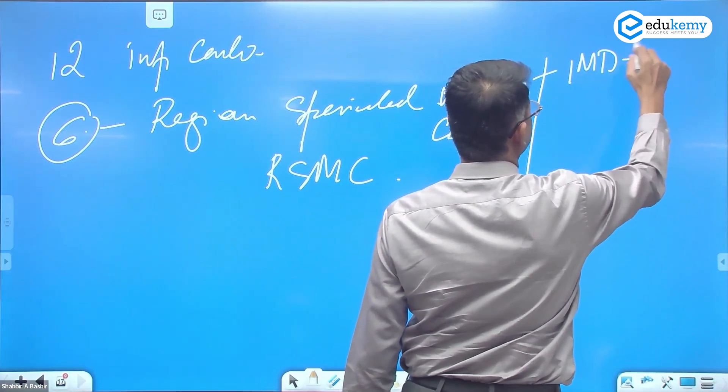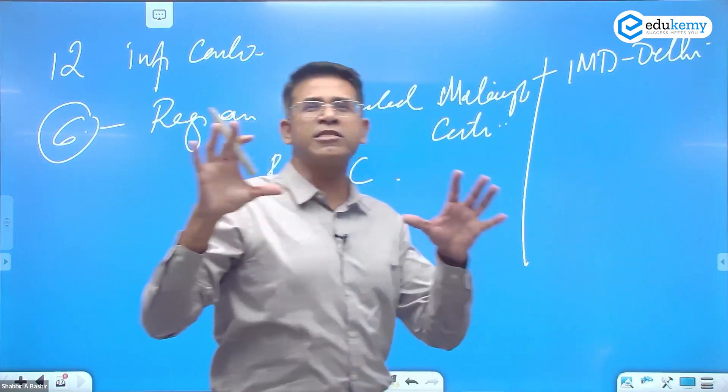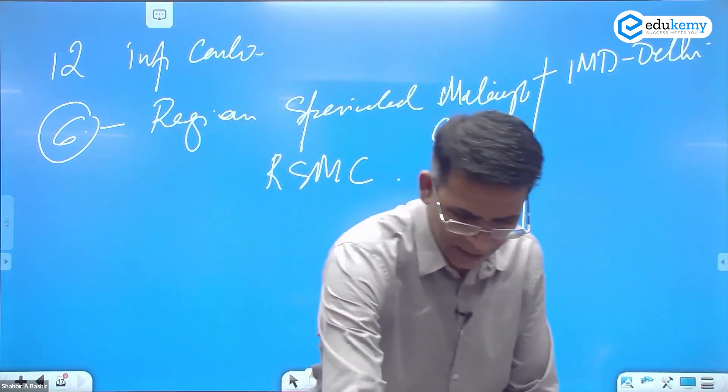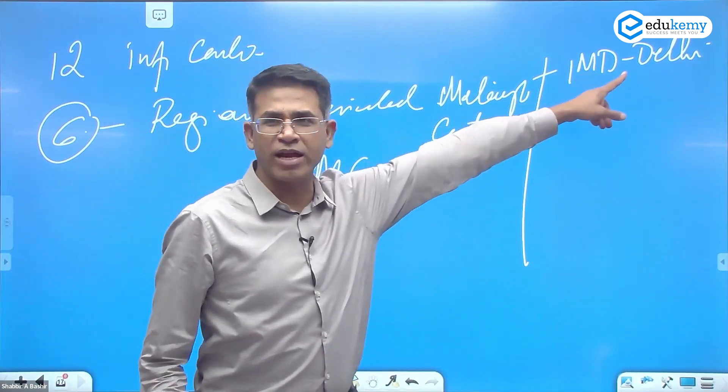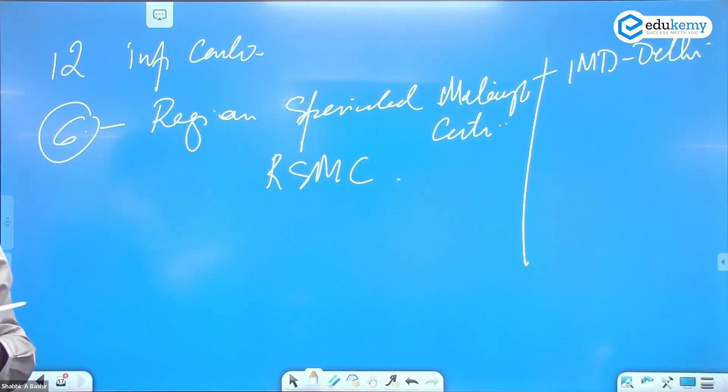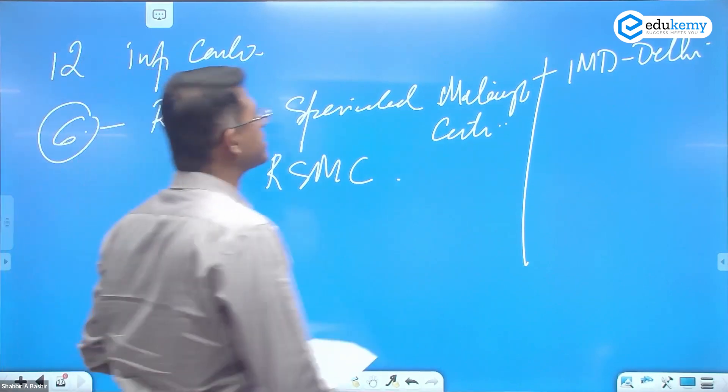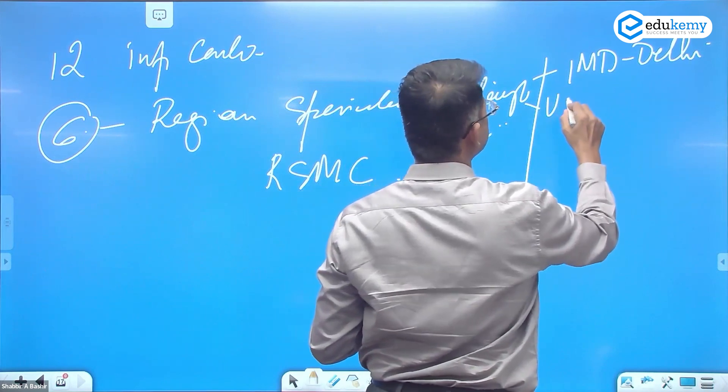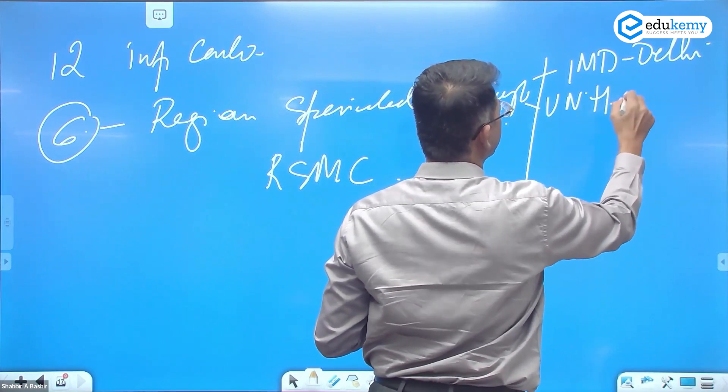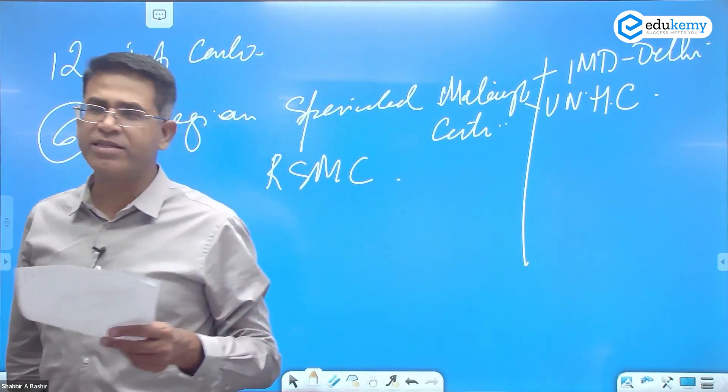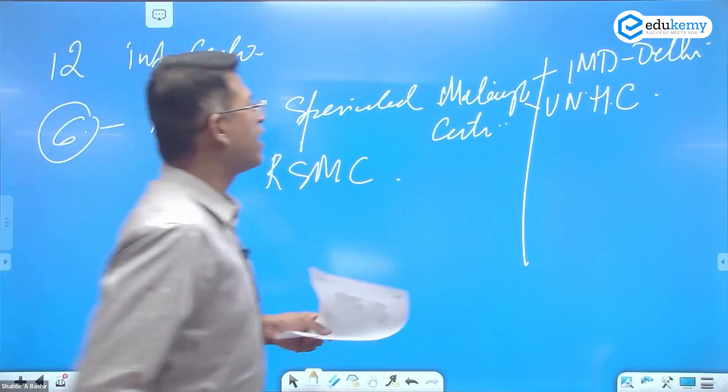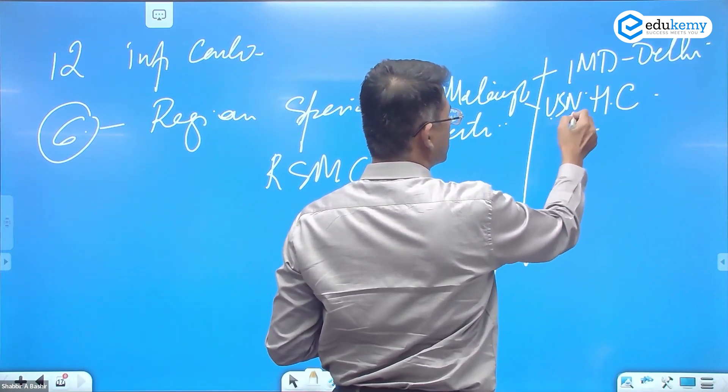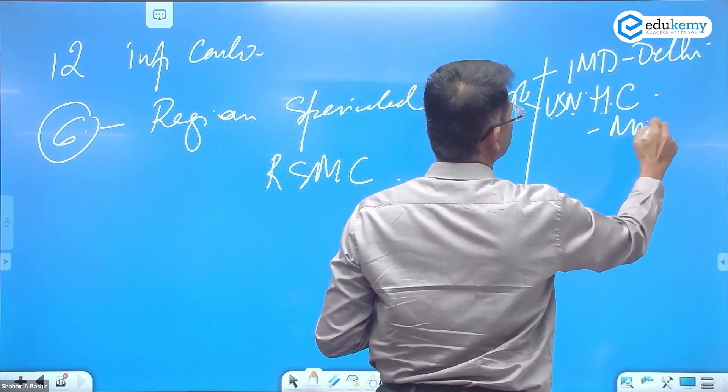These six centers include IMD - Indian Meteorological Department in New Delhi, and US National Hurricane Center in Miami, Florida.